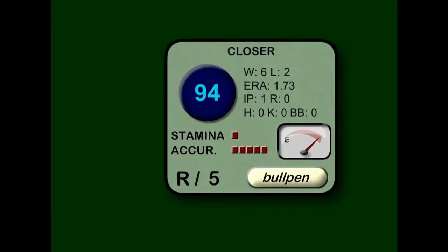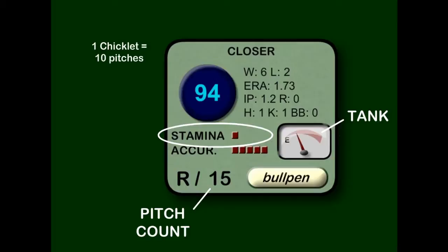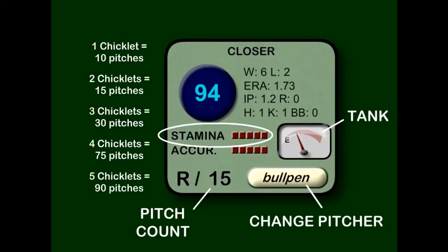Let's take another look at the pitcher info box. There's a pitcher tool called Stamina, and its value corresponds to the pitch count. You can check the pitcher's fatigue level by looking at the tank — as the pitch count goes up, the tank runs out. A stamina level of 1 will start to fatigue at about 10 pitches; 2 at 15 pitches; 3 at 30; 4 at 75; and 5 at 90 pitches. As fatigue increases, both the accuracy and velocity will degrade. So when it comes time to make a pitching change, just click on the bullpen button and select a new pitcher.